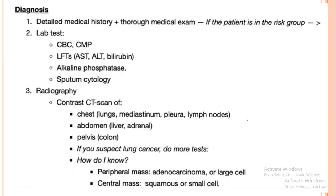For diagnosis of lung cancer, a detailed medical history and thorough physical examination are performed. If the patient belongs to a high-risk group, lab tests are done including CBC and comprehensive metabolic panel — liver function tests such as AST, ALT, bilirubin, and alkaline phosphatase — and sputum cytology to check for cancer cells.